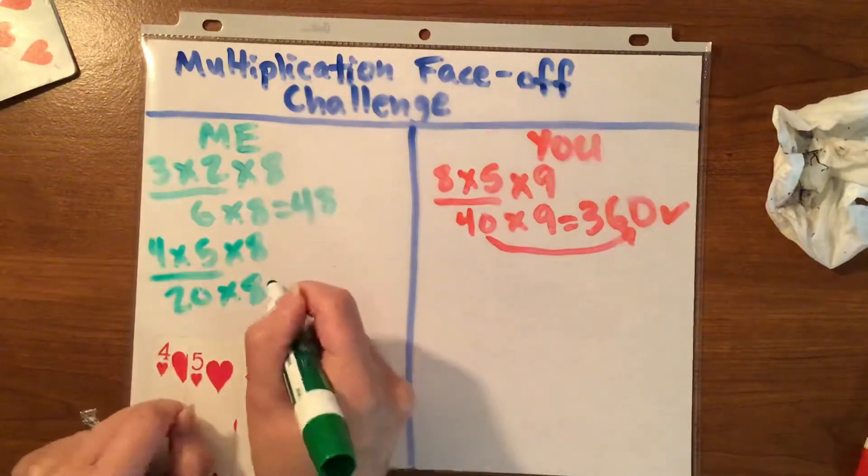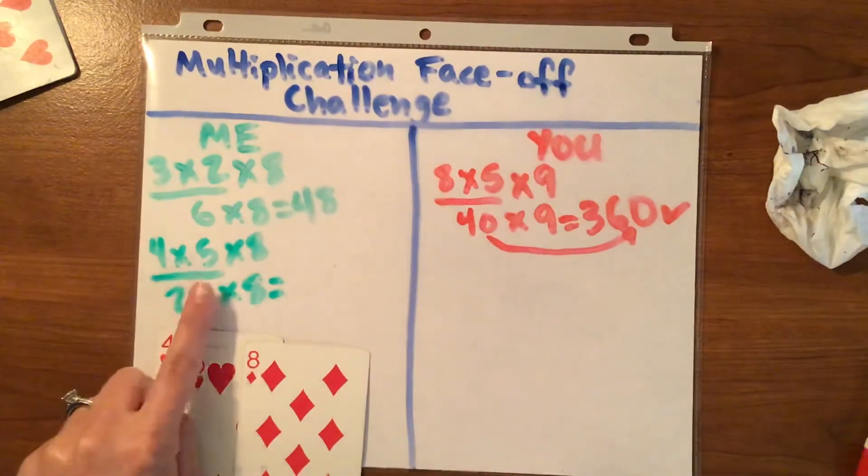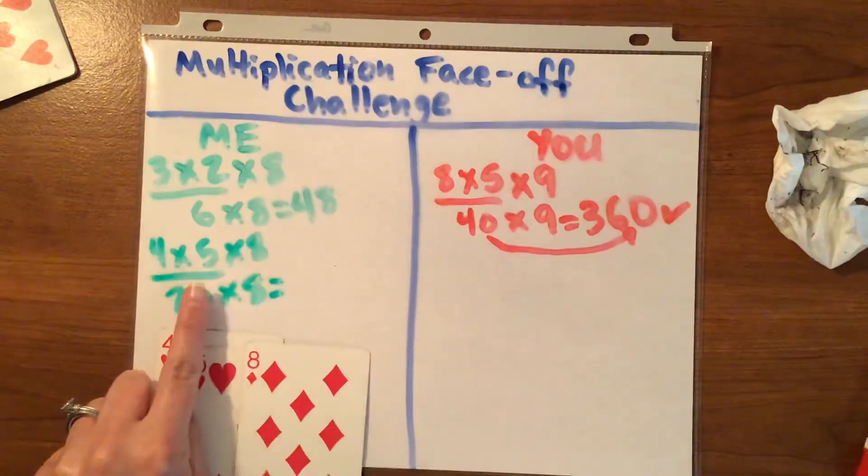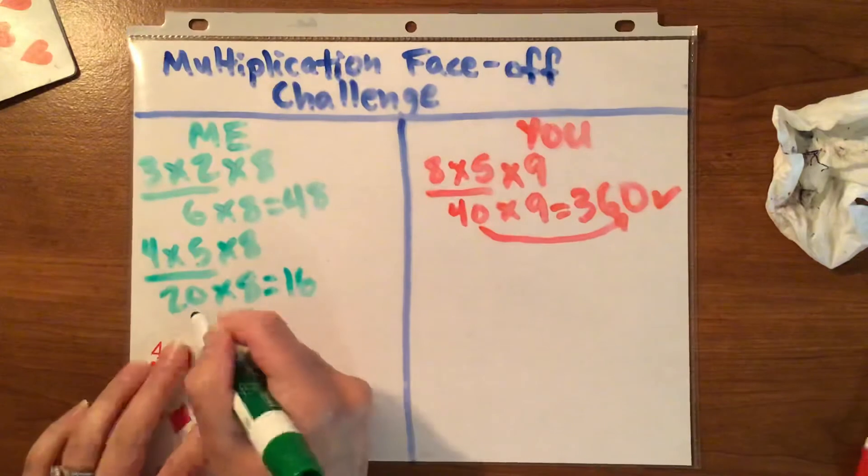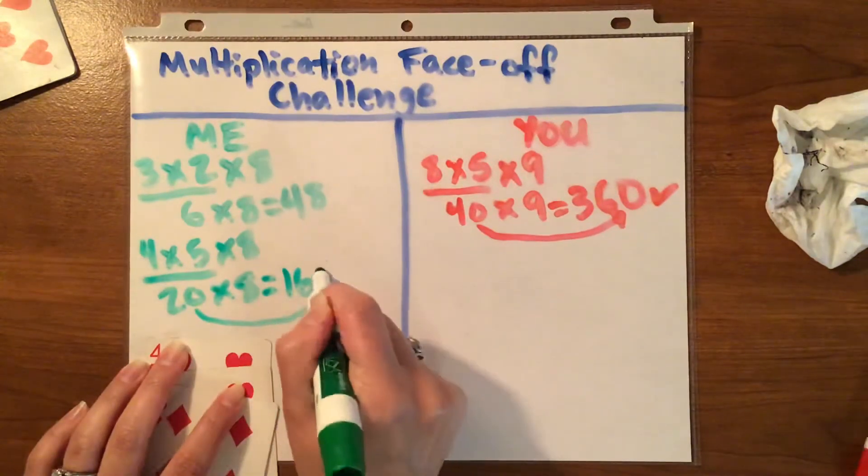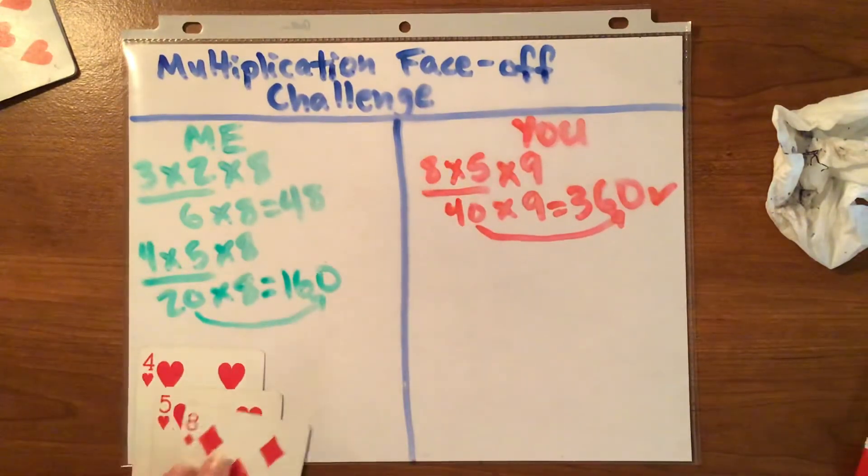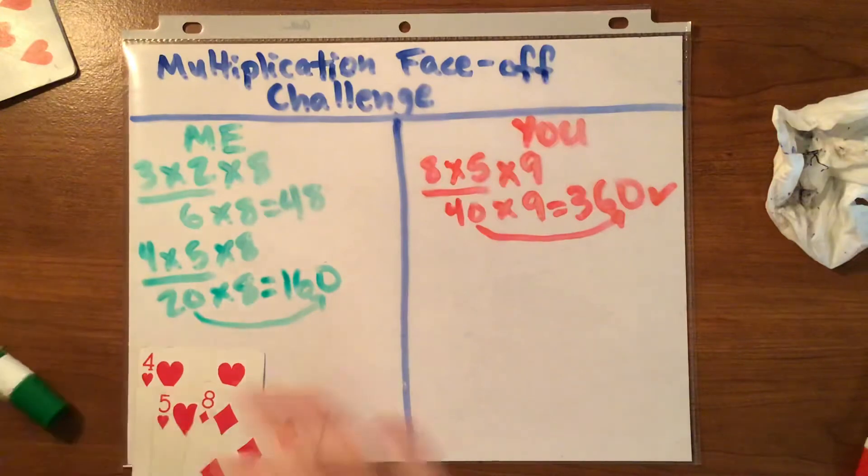Now, if you're not going through twenty yet, cover up the zero. Two times eight is easy. That's a double. That's like saying eight plus eight. Eight plus eight is sixteen. And then you just put the zero at the end. One hundred sixty. One hundred sixty.